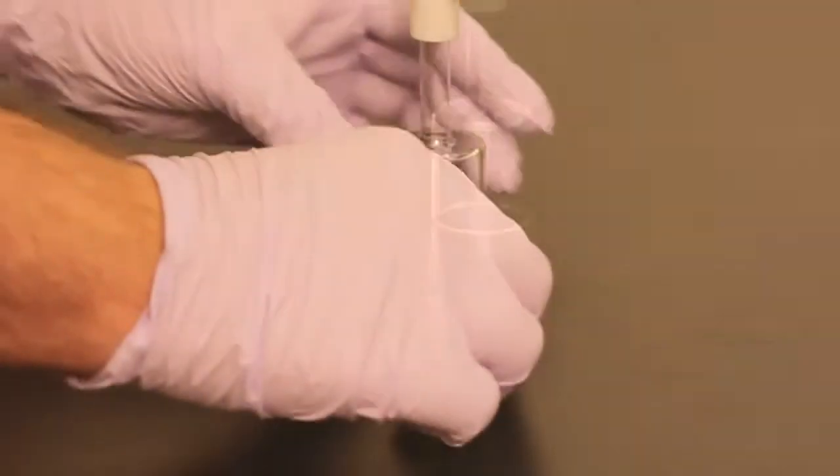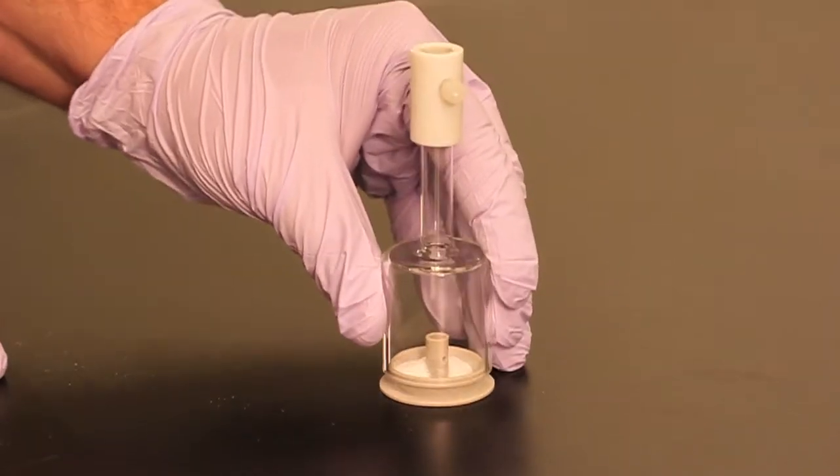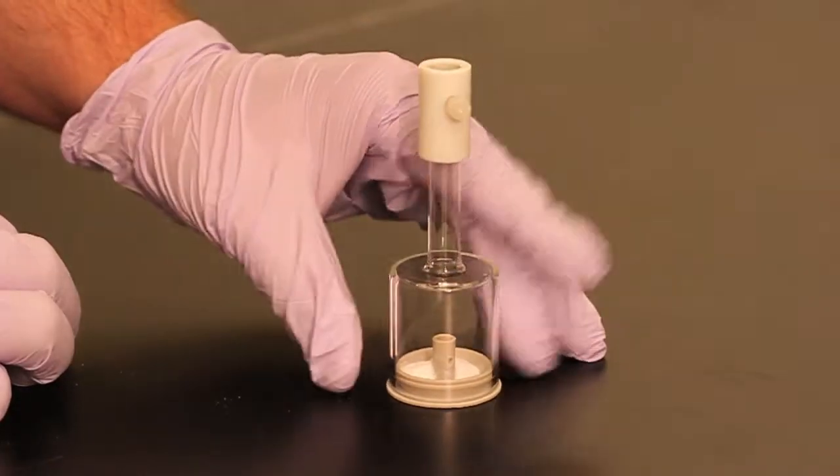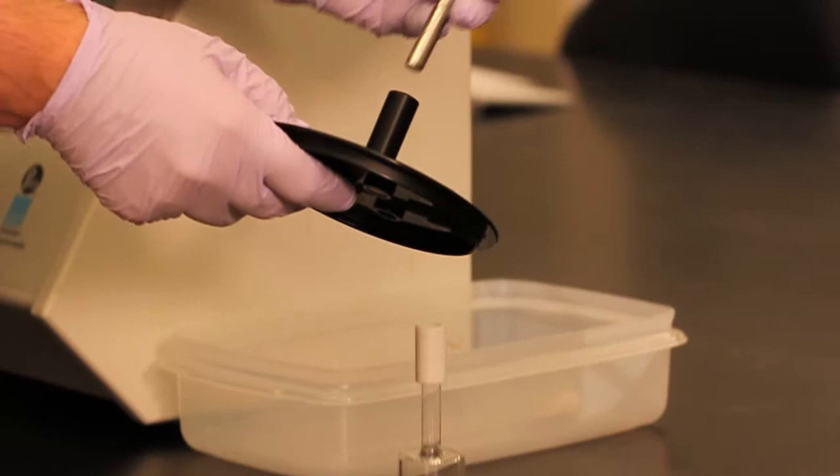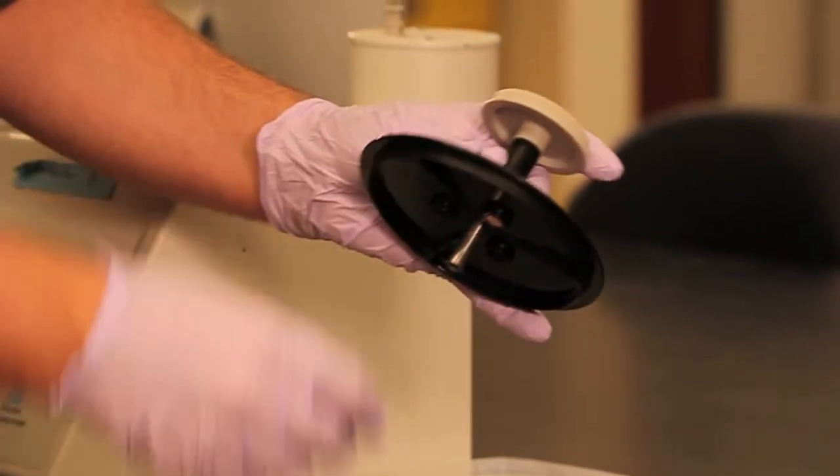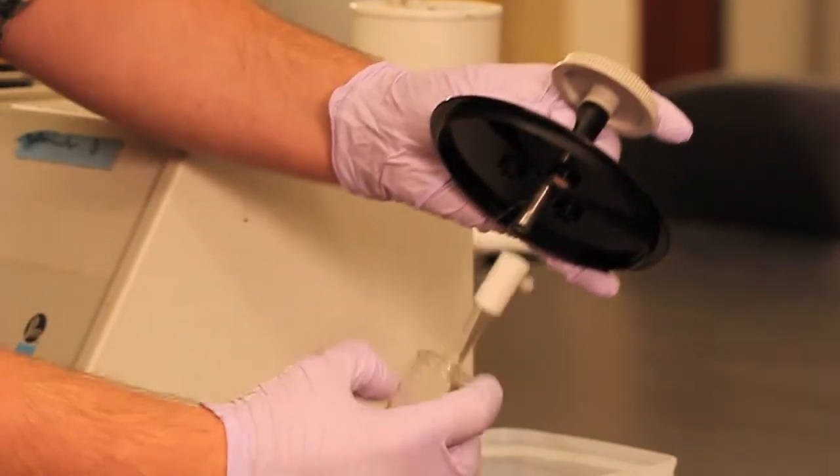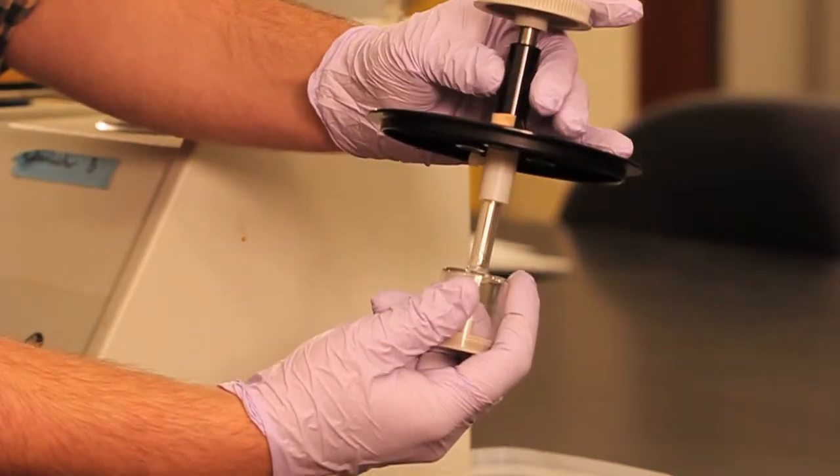Gently place the bell over the sample cup and press the bell onto the sample cup. The sample assembly can then be attached to the drive rod. Secure the sample cell of the drive rod by tightening the plastic screw on the coupling.